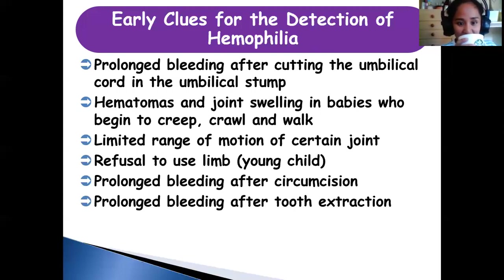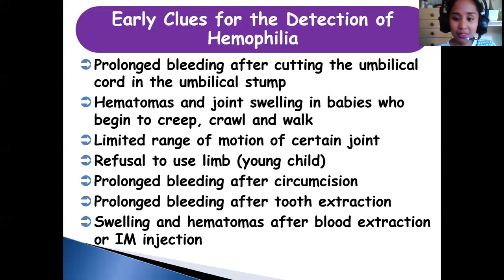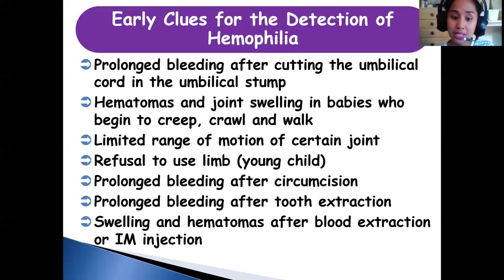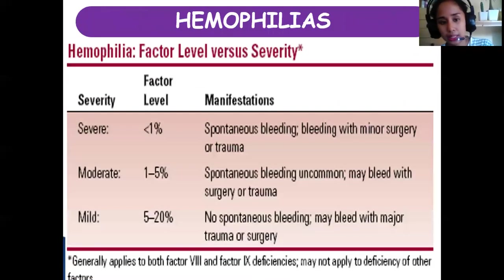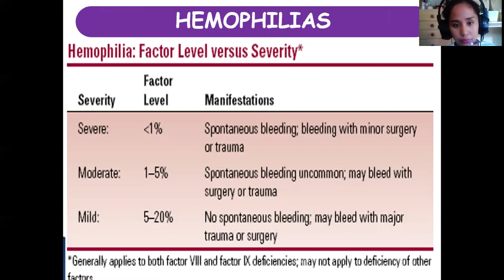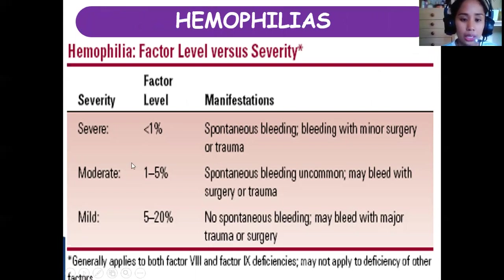Additional early clues include bleeding after tooth extraction, blood extraction, and intramuscular injections. If the child is basically prone to bleeding and muscle tightness, those are important warning signs.